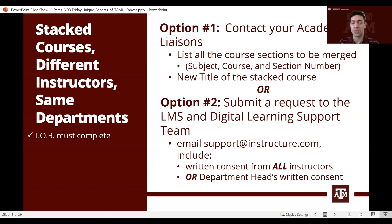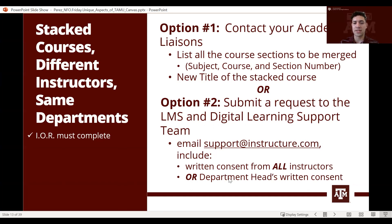This is where it gets more complicated, as you have to follow more steps. If you have stacked courses with different instructors but you're all in the same department, first contact your academic liaison and let them know you'd like to merge these sections. Then submit a request to the Digital Learning support team via email, including written consent from all instructors that they are okay with the merger — or you can provide your department head's written consent.